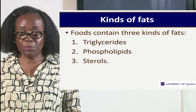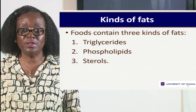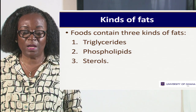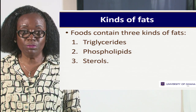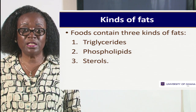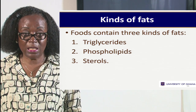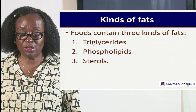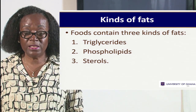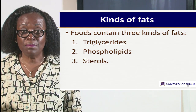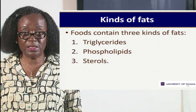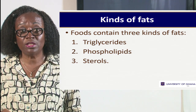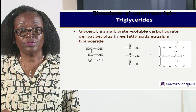And then the phospholipids — normally we have them in our meat products, and they are part of our cell membranes. And then the steroids — a typical example is cholesterol. Where do we find cholesterol? We find it in our meat and meat products, and we also find it in eggs — the yellow part is also rich in cholesterol.